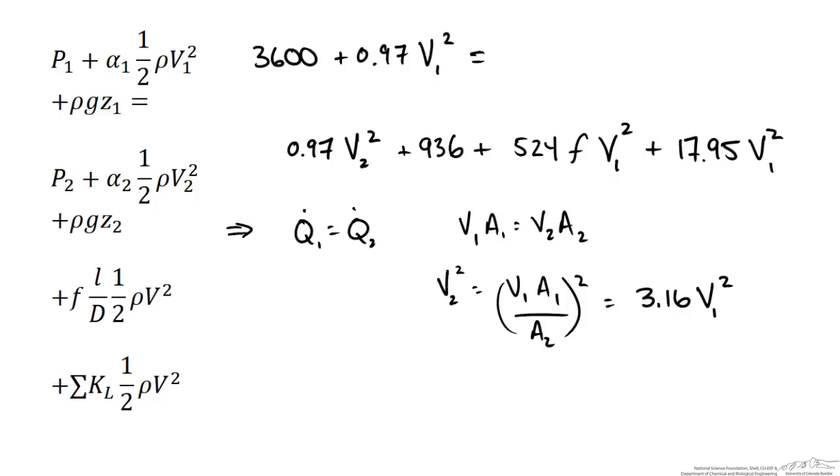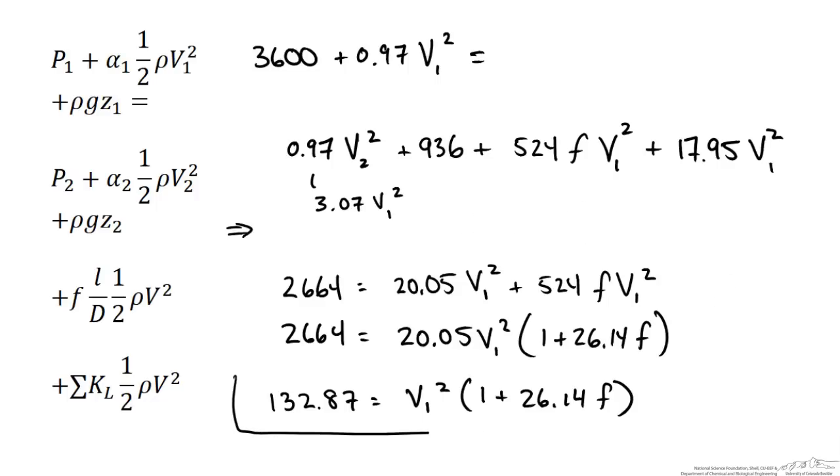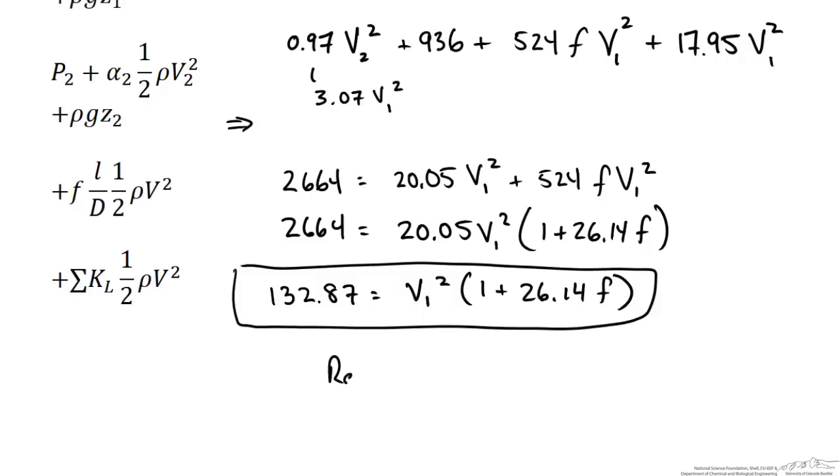So now plug this in here and simplify our equation. Now we have our equation where we can determine a friction factor and our velocity and plug it in to satisfy what we know here. Plus we have our Reynolds number equation up top where we said the Reynolds number was equal to 6906 times our velocity. So the only thing left now is an equation to calculate our friction factor.